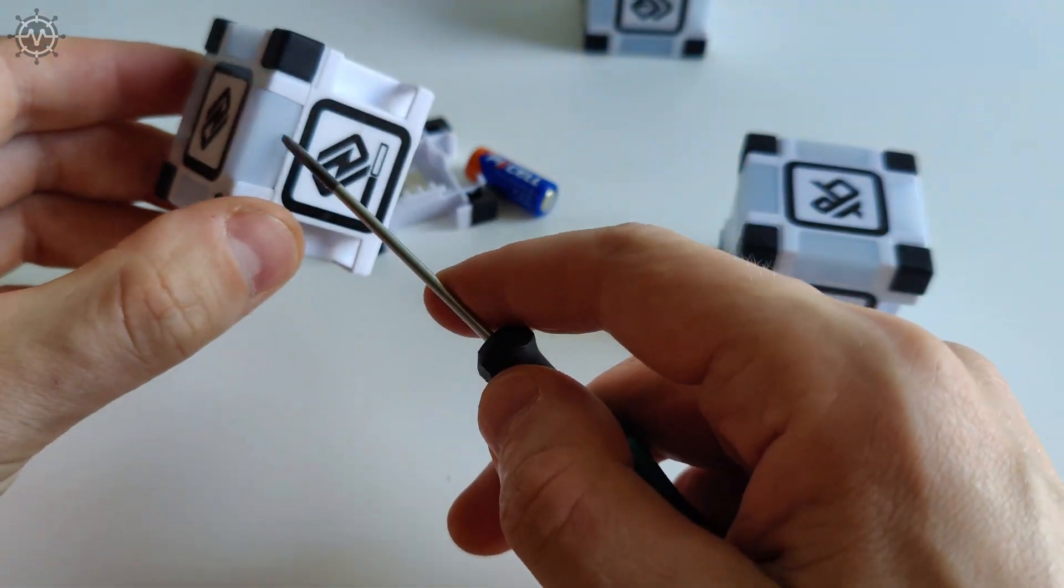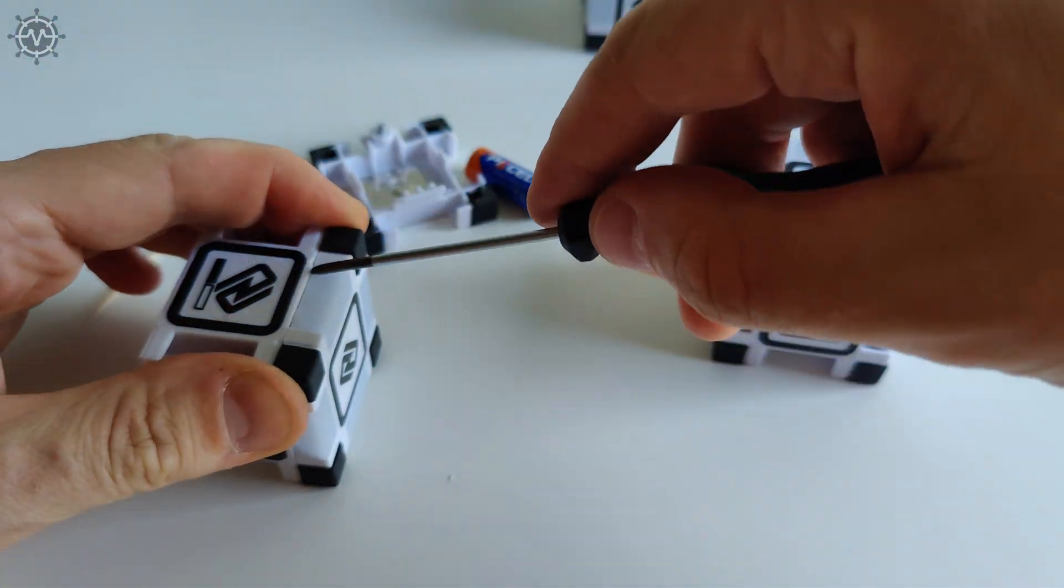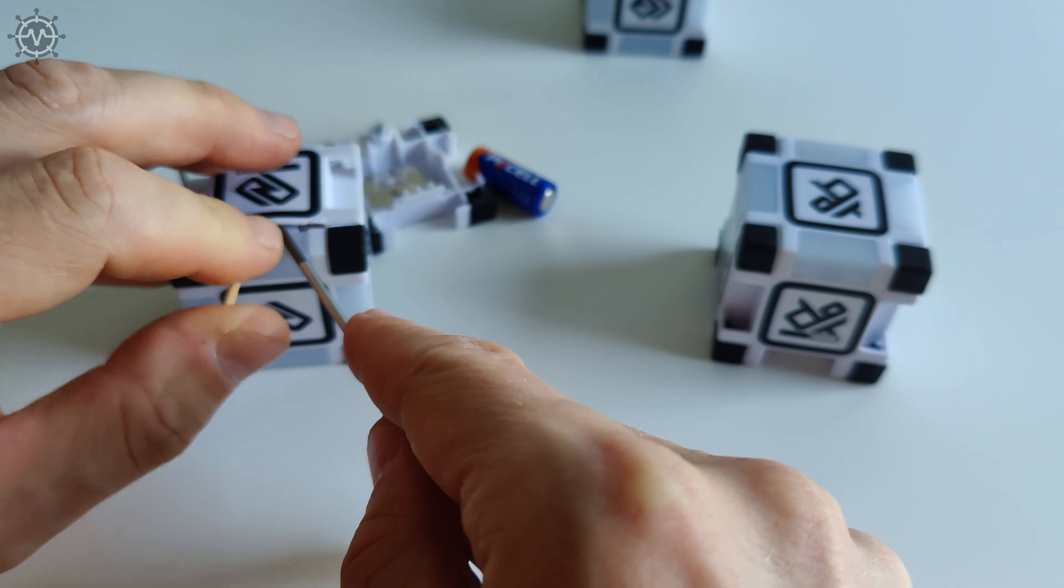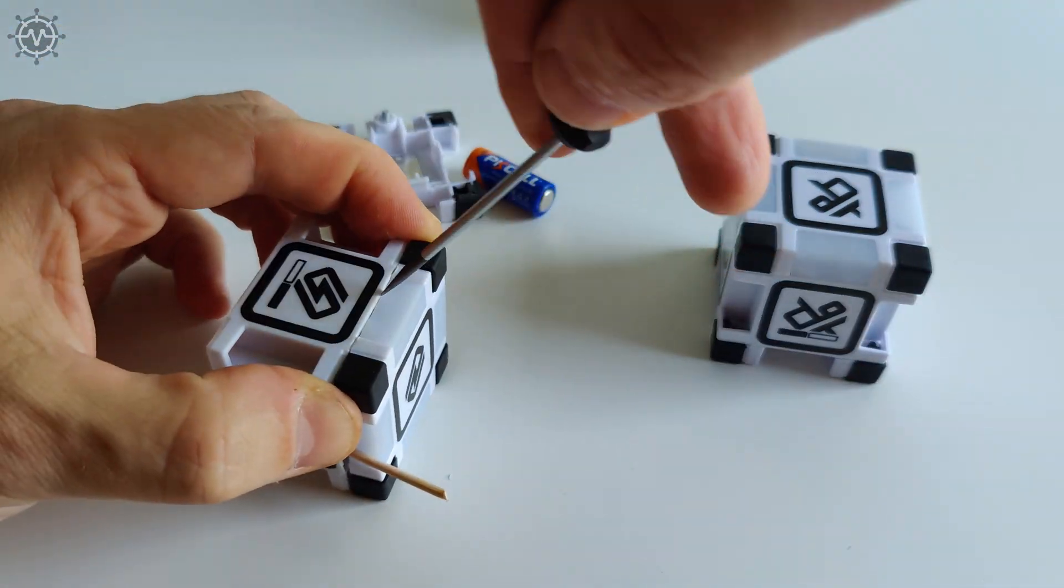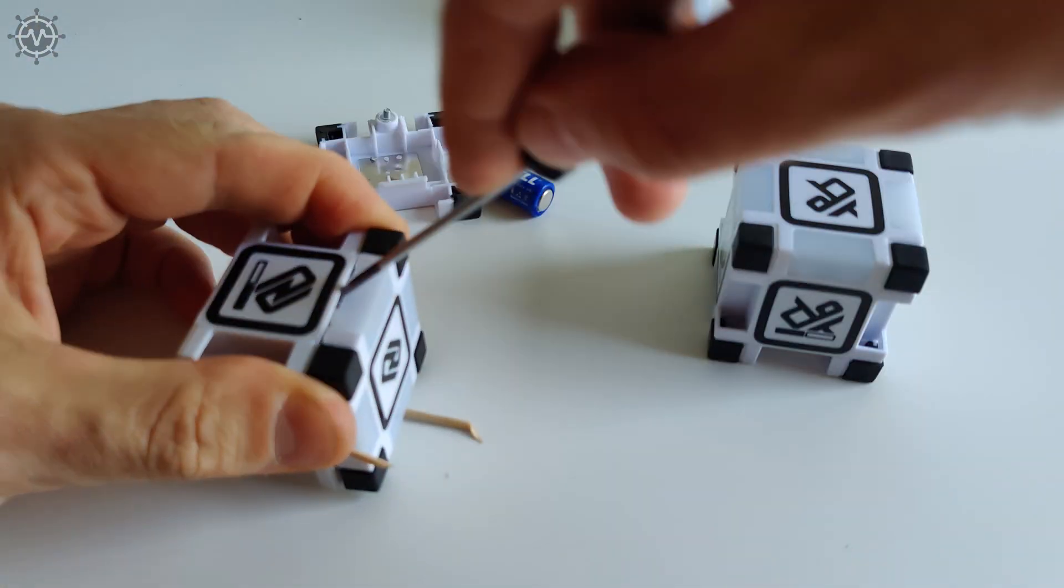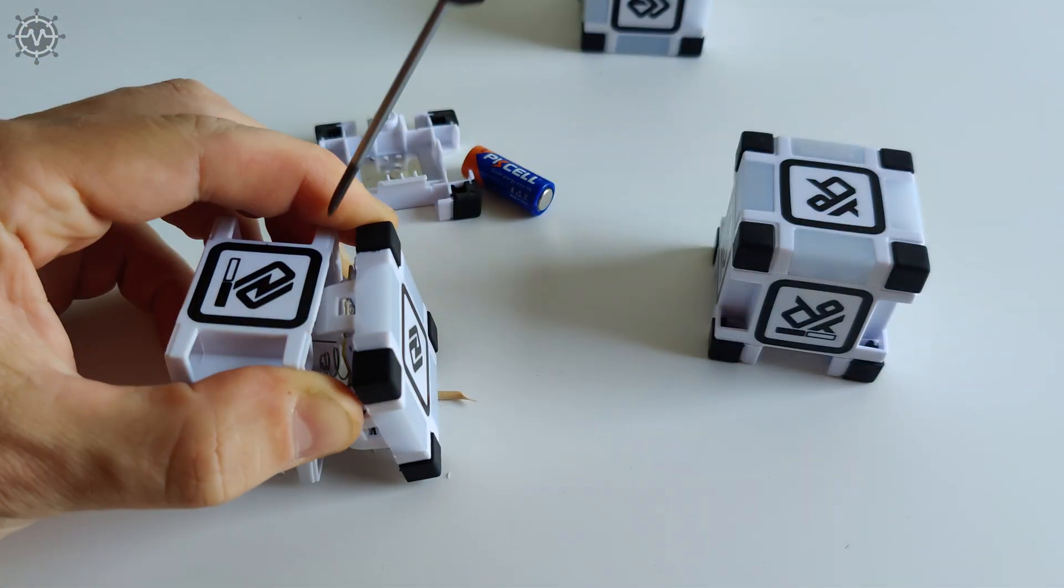Then, using a thin screwdriver and a toothpick, I carefully opened one of the dead cubes and removed the main circuit board. I did a lot of tests with this circuit board, but to save your time and my time, I didn't film them because they weren't essential.